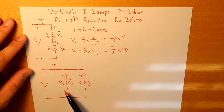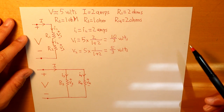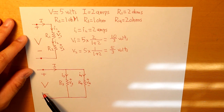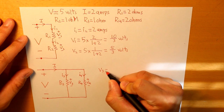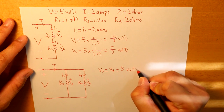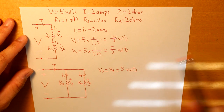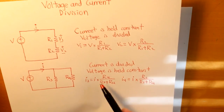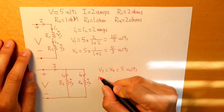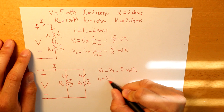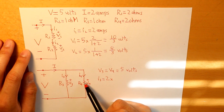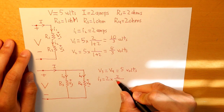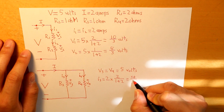Now the second circuit has resistors in parallel. Voltage is held constant, so V3 and V4 are both equal to the total voltage: V3 = V4 = 5 volts. For the current, I3 and I4 are going to be divided. To find I3, we take the total current — 2 amps — multiplied by the opposite resistor R4 (which is 2 ohms), divided by R3 + R4 (1 + 2 = 3). So I3 = 4/3 amps.